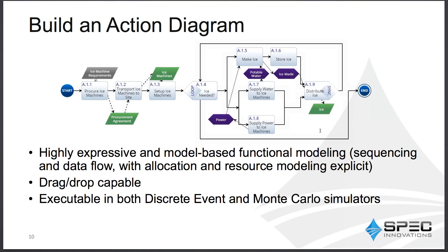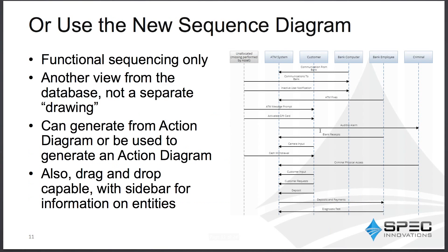We have both discrete event and Monte Carlo simulators — that's where we really excel. We have an incredible way to pull together data with automatic cost curves and other information. One thing a lot of people wanted was the sequence diagram, and we agreed. The hard part about developing it is that it's not just a picture — it has to tie together with the action diagram, so you can go back and forth between them. Every diagram is now drag-and-drop capable with sidebars to click on and get information about entities in the database.